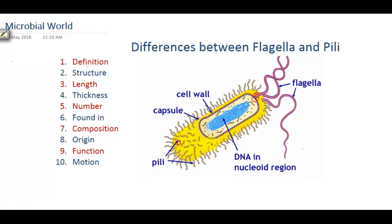If we look at the structure of both pili and flagella, in terms of flagella it is a helical structure — that means spiral in shape, not straight. On the other hand, pili is straight in shape but not helical. If we compare their length, flagella is very long, but pili is very short.